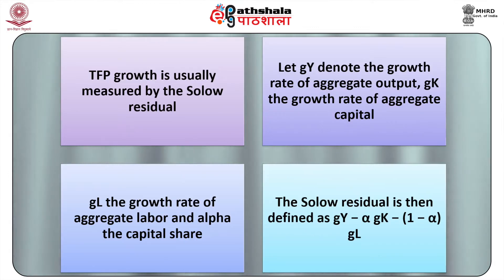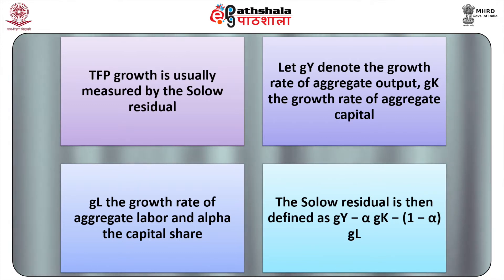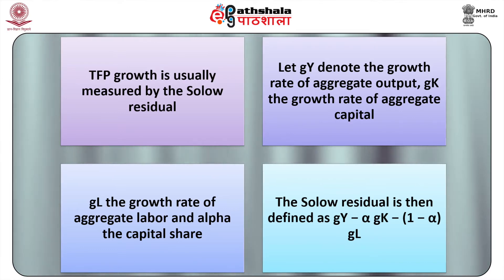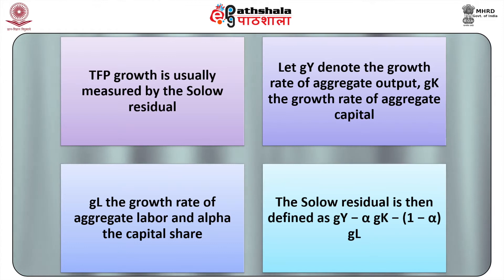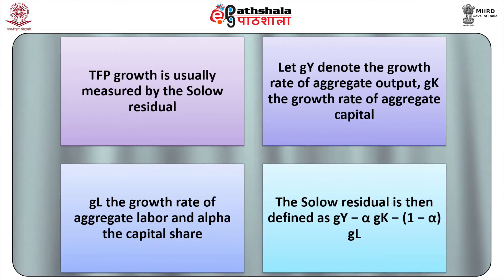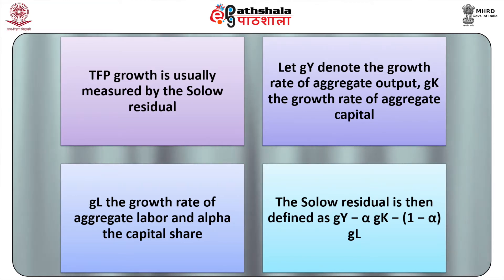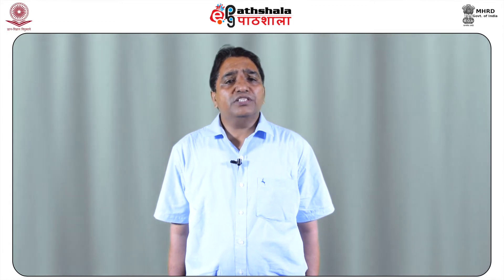TFP growth is usually measured by the Solow residual. Let GY denote the growth rate of aggregate output, GK the growth rate of aggregate capital, GL the growth rate of aggregate labour, and alpha the capital share. The Solow residual is then defined as: GY minus alpha×GK minus (1 minus alpha)×GL. The Solow residual accurately measures TFP growth if: (1) the production function is neoclassical, (2) there is perfect competition in factor markets, and (3) the growth rates of the inputs are measured accurately.